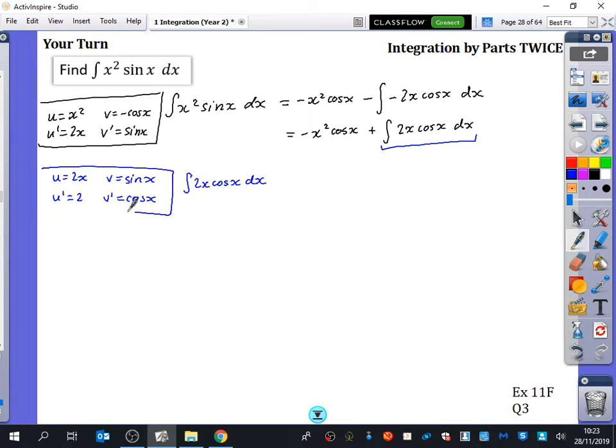Let's box that off so we know it's got nothing to do with what I'm working out. We then get uv, which is 2x sin x minus the integral of these two, which is 2 sin x dx. So that's 2x sin x.